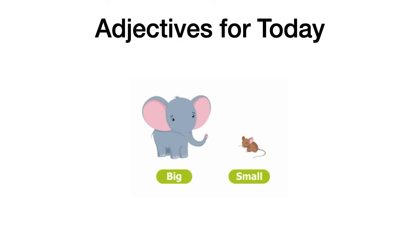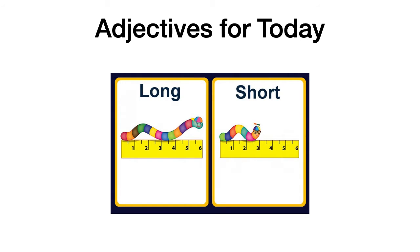Next pair. La siguiente pareja de adjetivos: long, short. Tenemos dos formas de pronunciar la palabra short — puede ser con una O bien larga: short, o pronunciando la R: short. Long is largo. And short is corto. Long: largo. Short: corto.